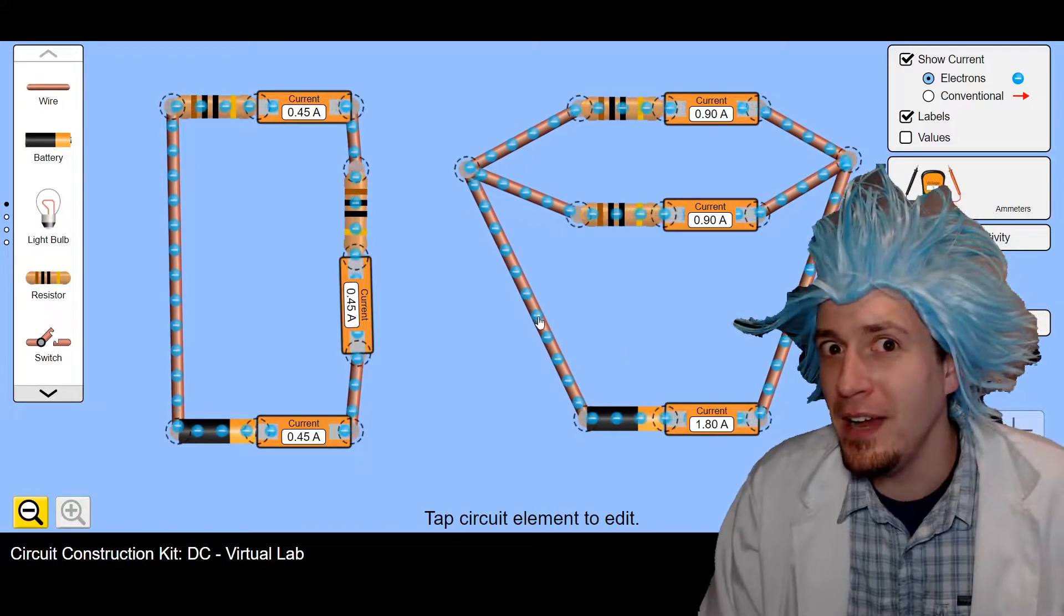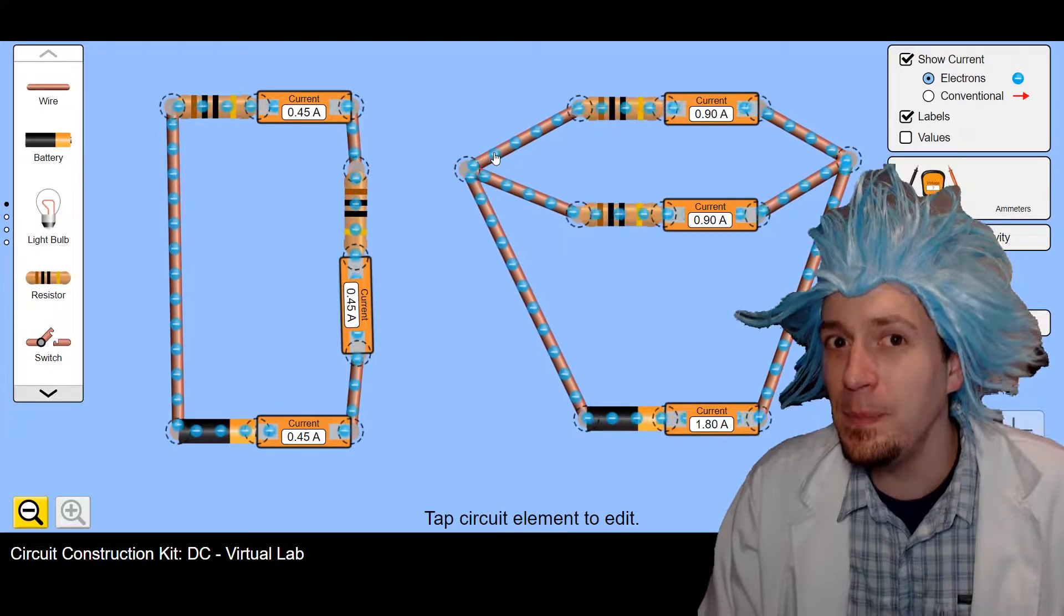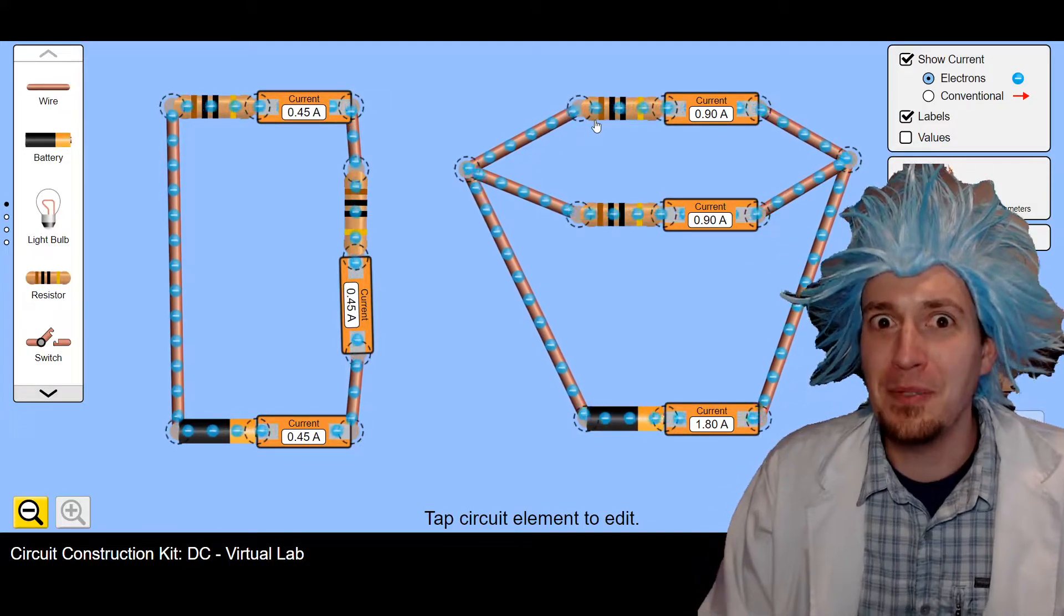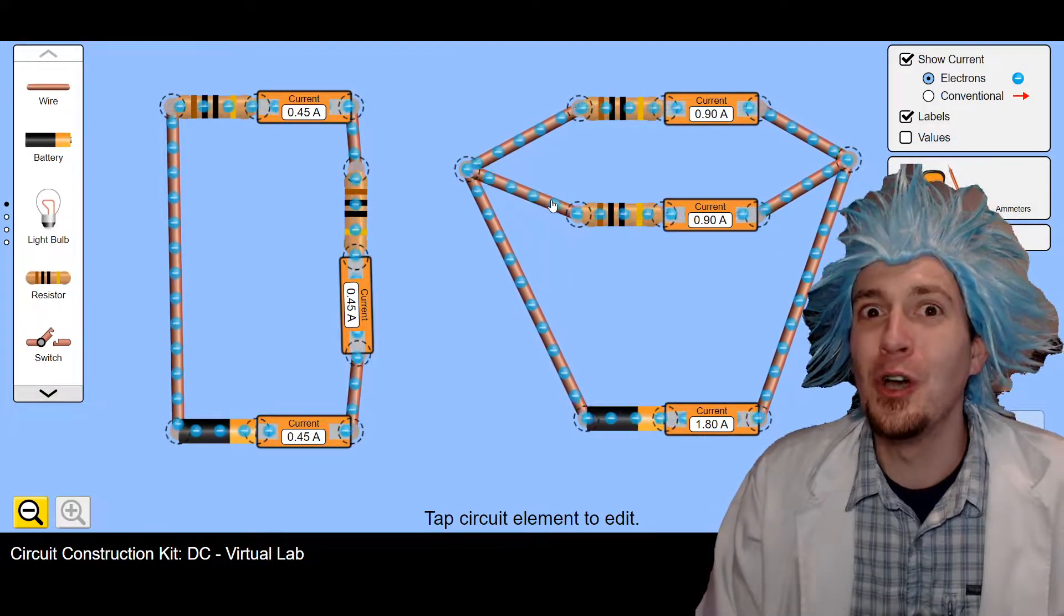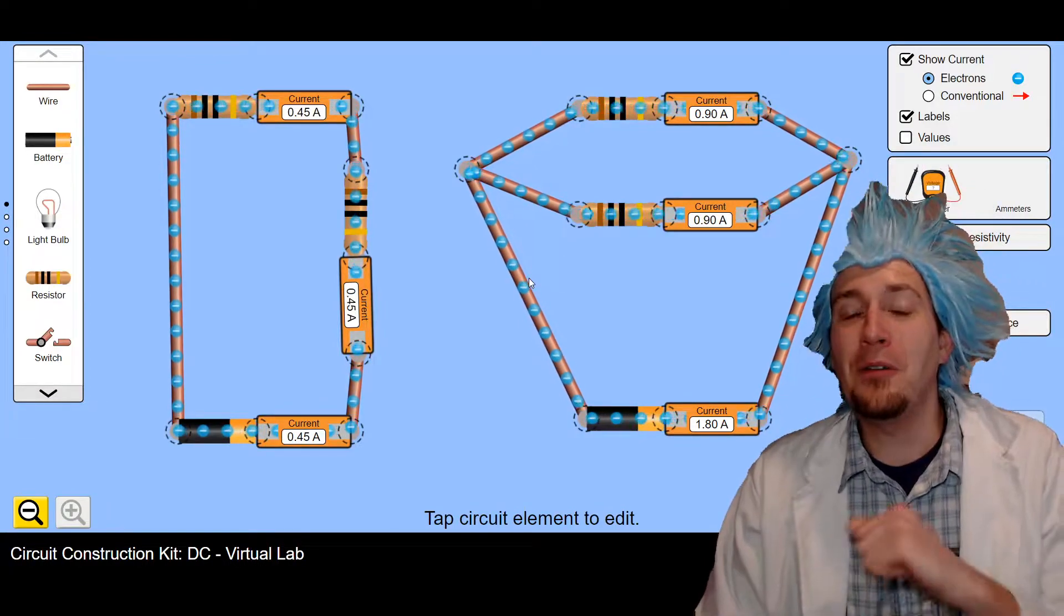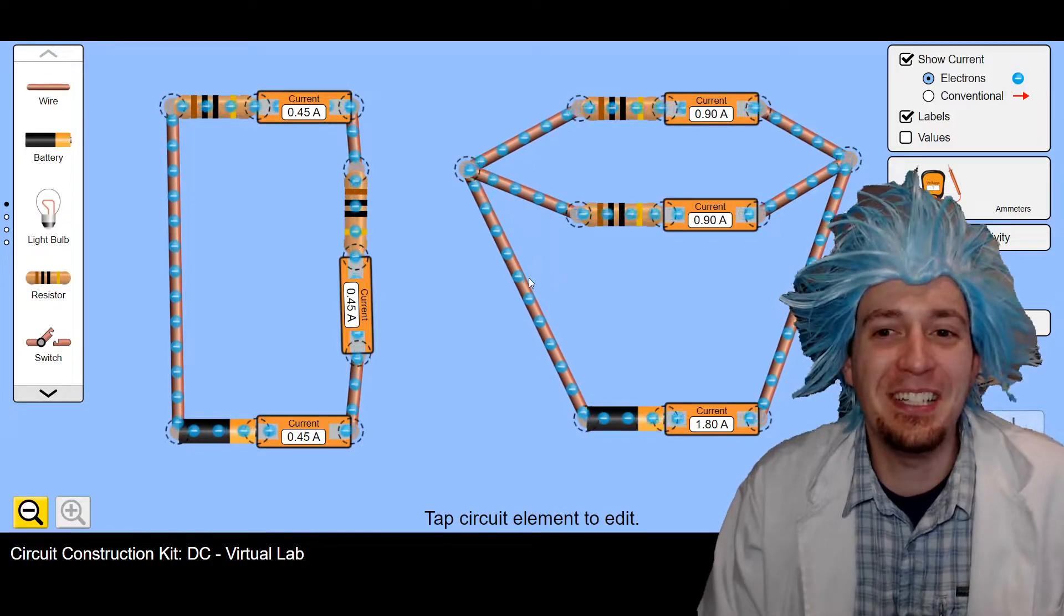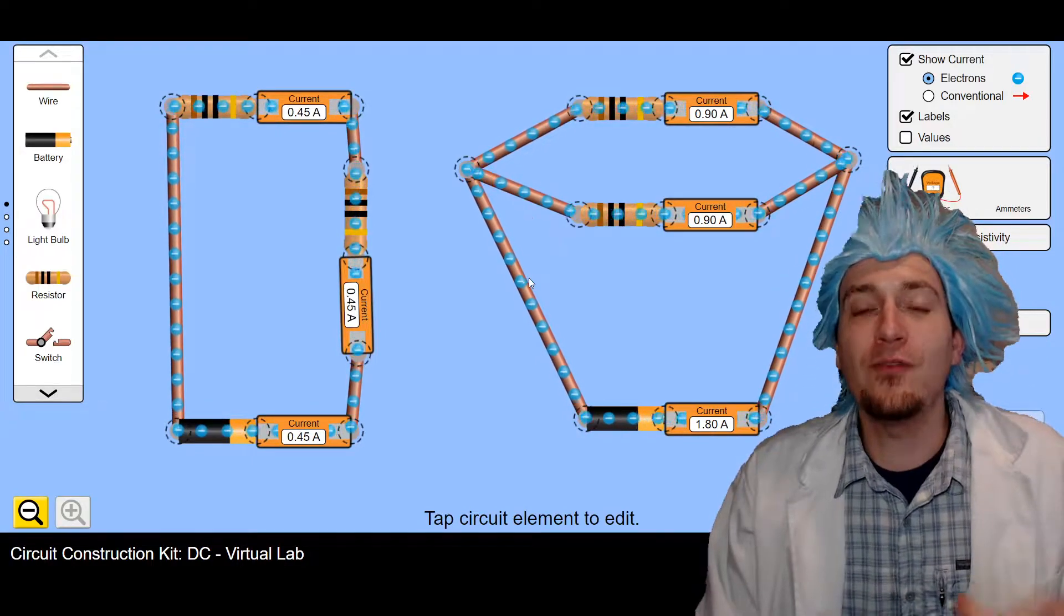Now if we look here carefully at these electrons, they come here and they split at the junction. Some electrons go to the top resistor, and some go to the second resistor. Now what you are asked to do by your lovely, fantastic, and amazing teacher was to look at these for relationships.